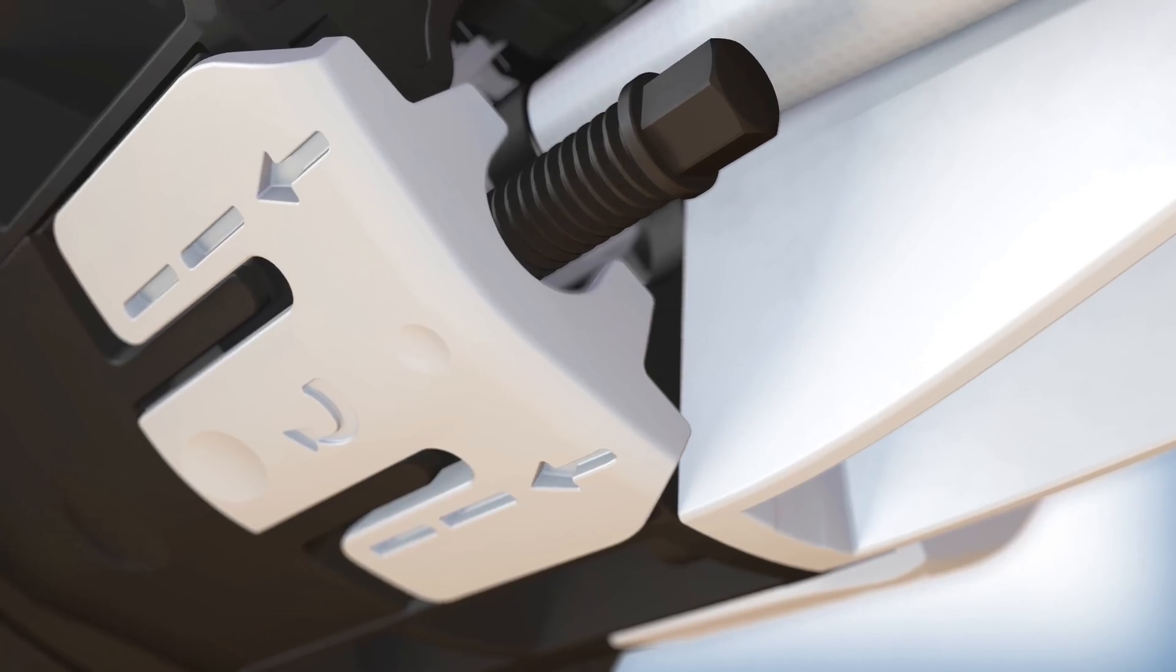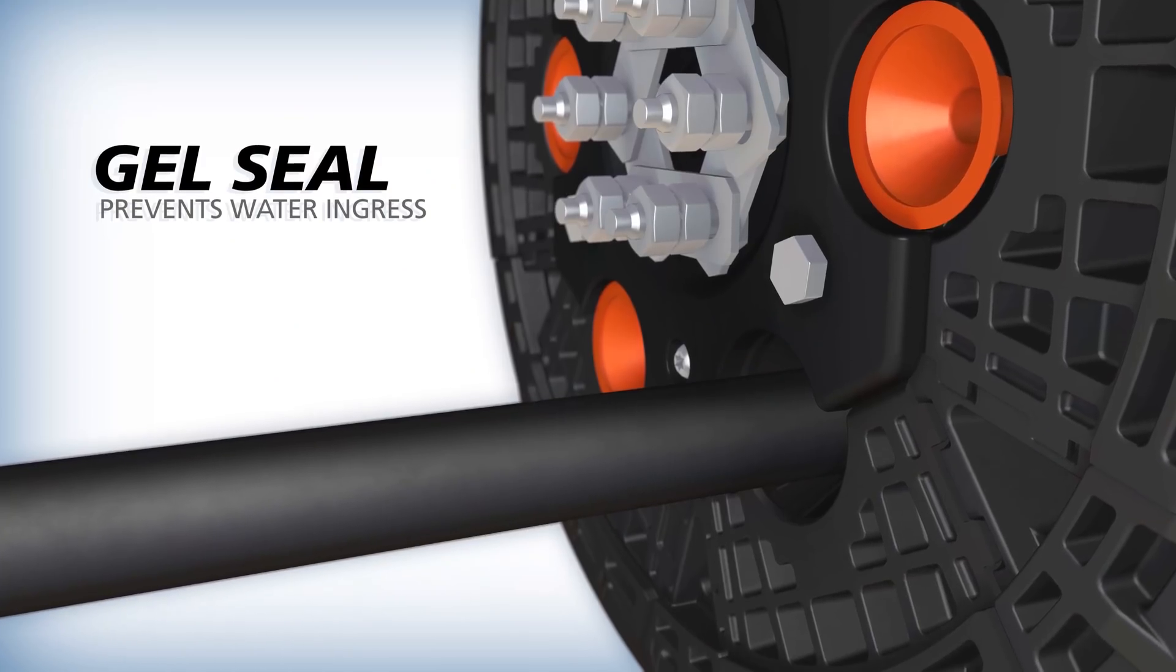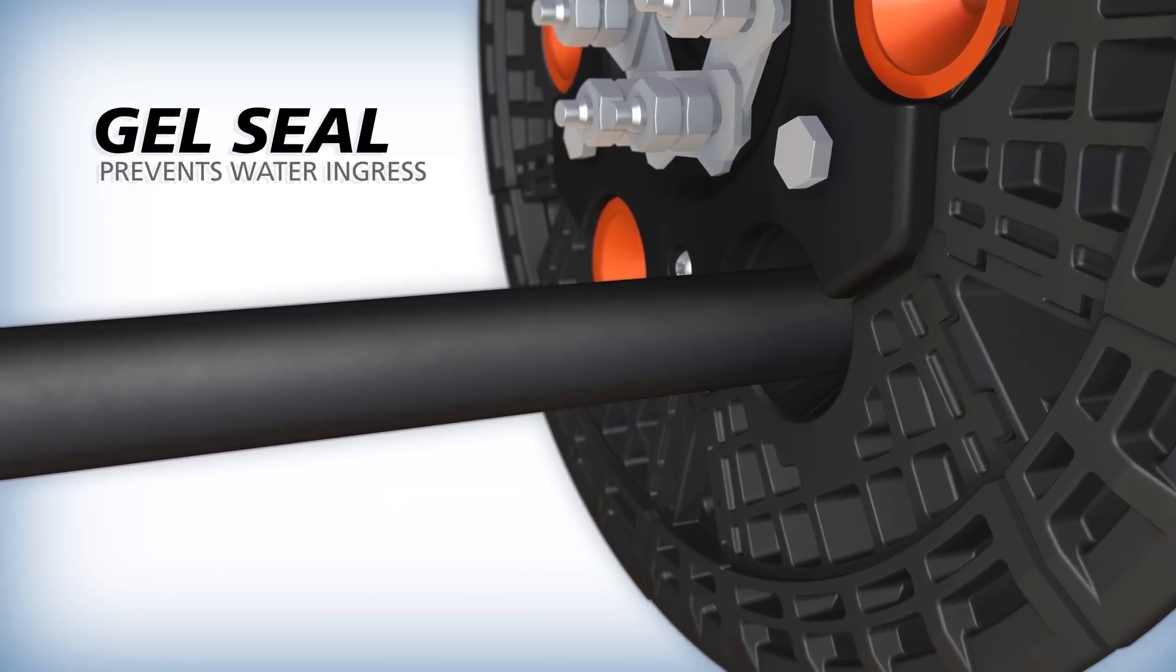To complete the seal, the integrated wedge screw is simply turned until it stops, compressing the gel around the cable and sealing it against water ingress.